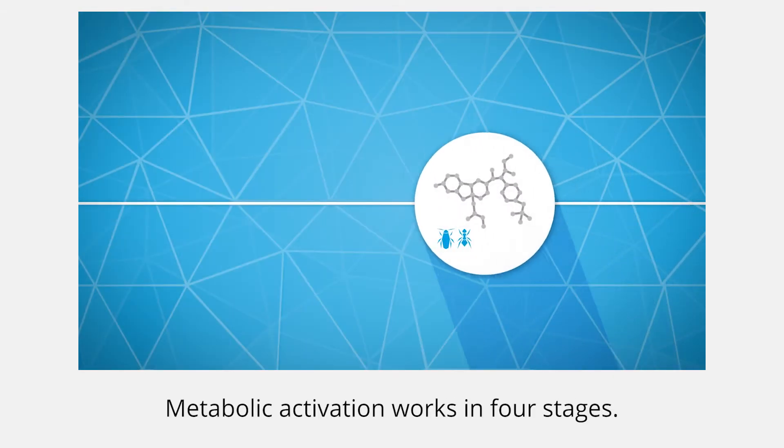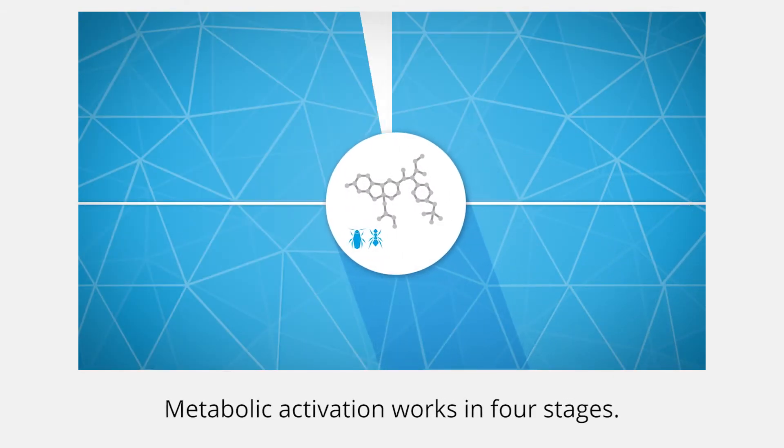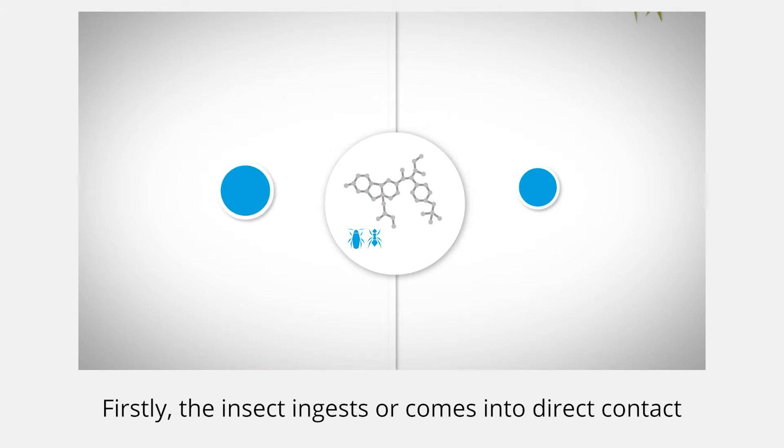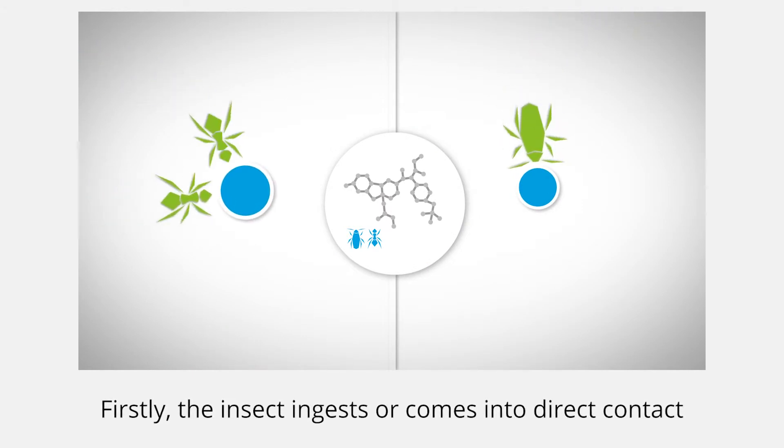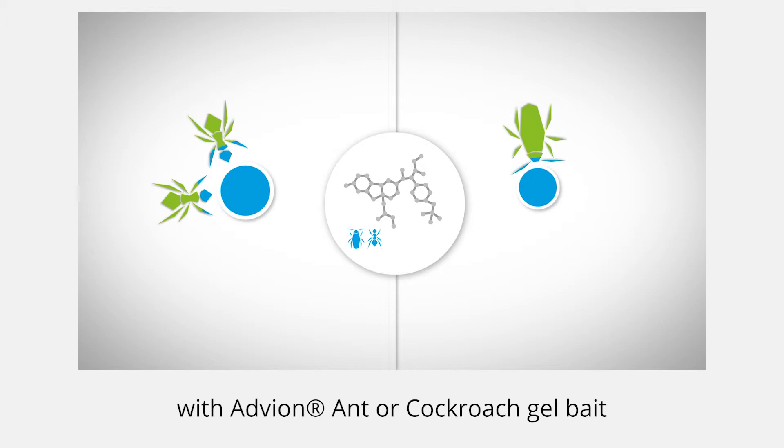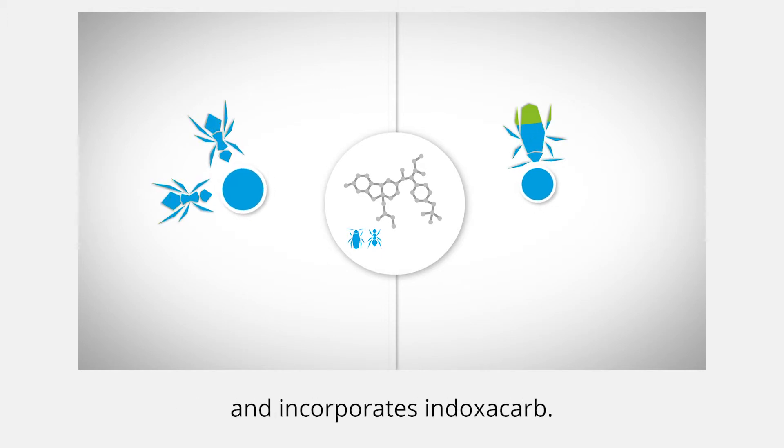Metabolic activation works in four stages. Firstly, the insect ingests or comes into direct contact with Advean ant or cockroach gelbait and incorporates indoxacarb.